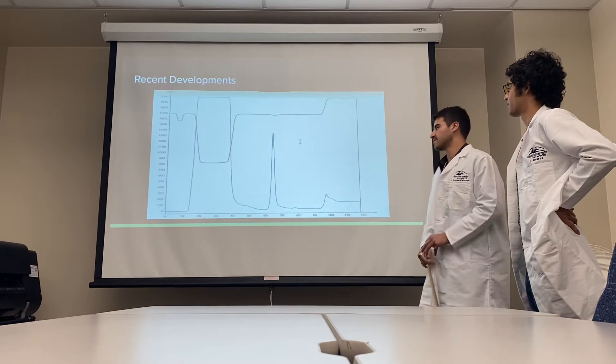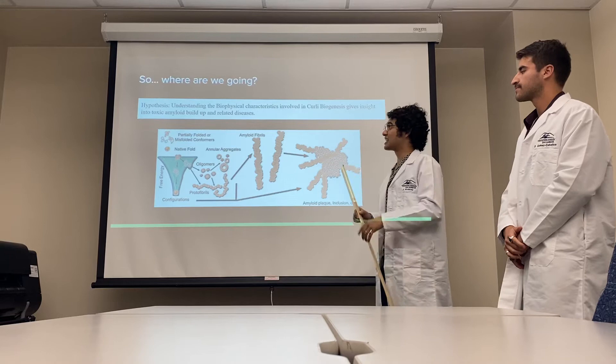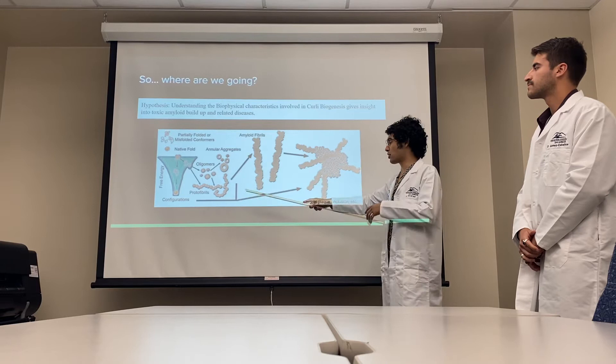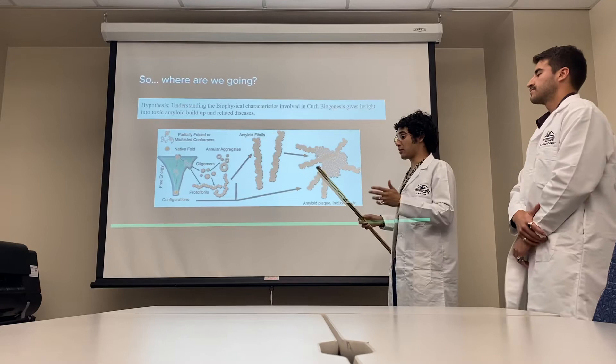The hypothesis we're trying to convey is that understanding the biophysical characteristics involved in curli biogenesis gives insight into toxic amyloid buildup and related diseases. We understand amyloids to be partially or misfolded conformers that oligomerize into annular aggregates or protofibrils, then turn into amyloid fibrils, and then into amyloid plaques — which physically hamper epithelial tissues such as in neurons, the intestines, or within the head region of any animal.